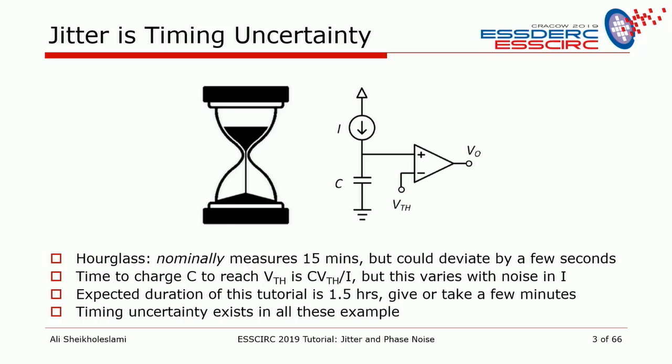Jitter essentially is another word for timing uncertainty, and timing uncertainty has been with us as long as time has been. I'm showing an hourglass — also known as a sand glass — used as a stopwatch. It's supposed to measure 15 minutes, but there's some uncertainty because the grains of sand are different shapes and you don't know exactly how they'll line up at the hole. This is the cause of timing uncertainty.